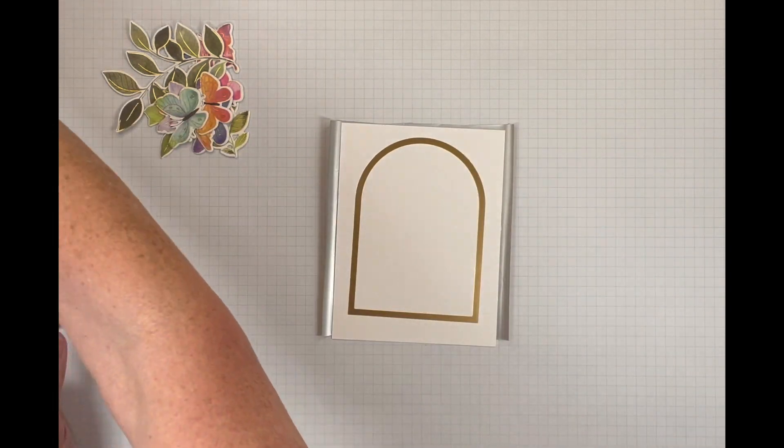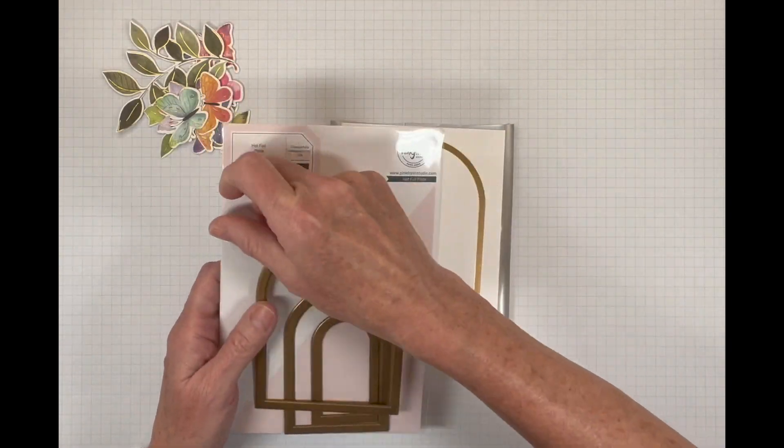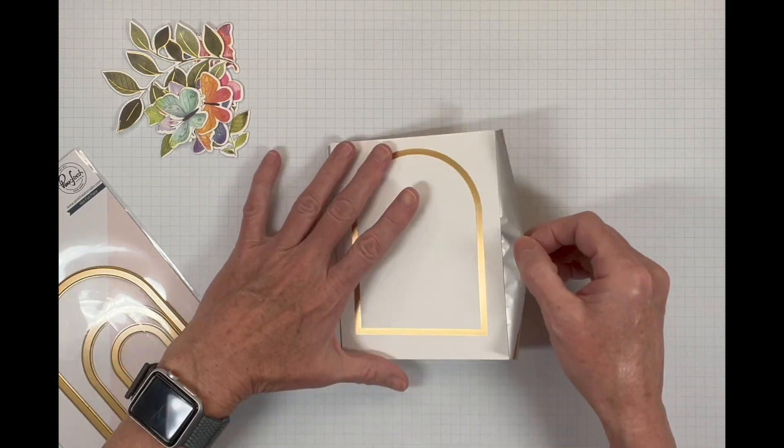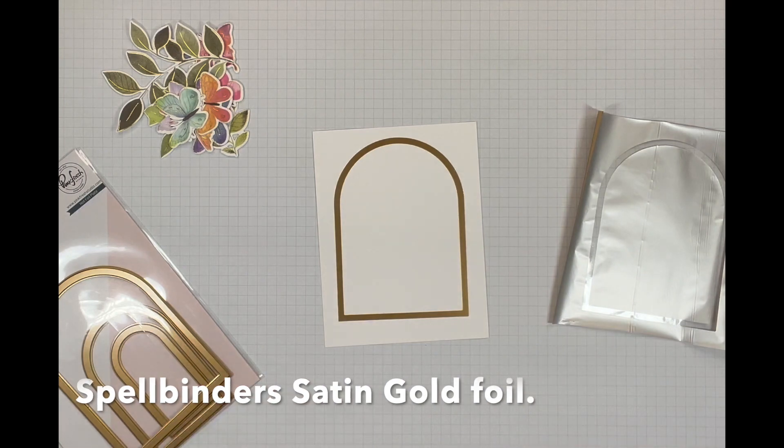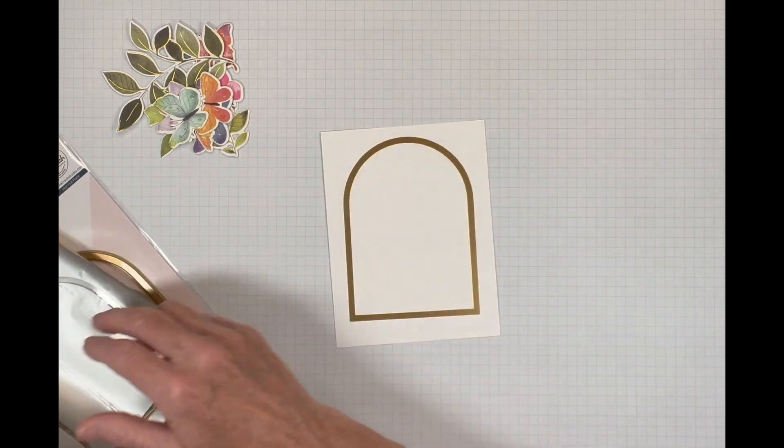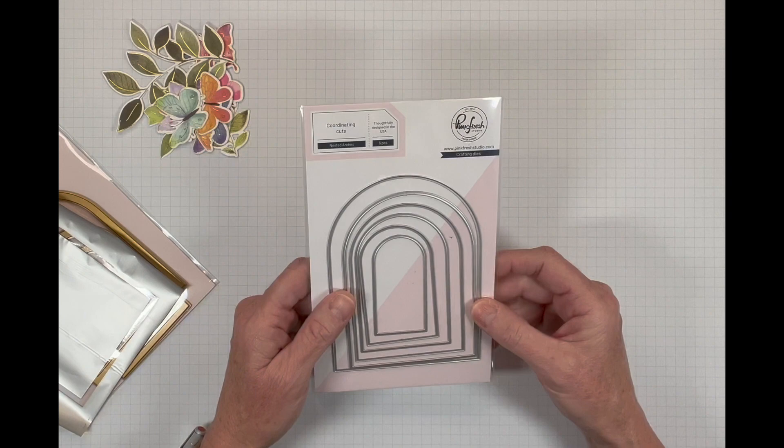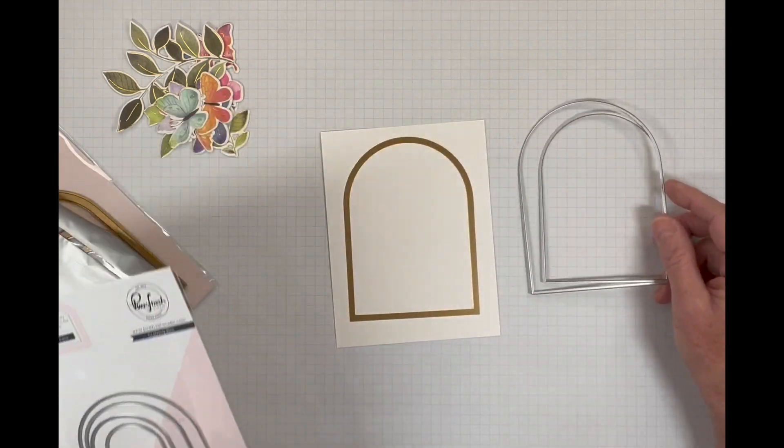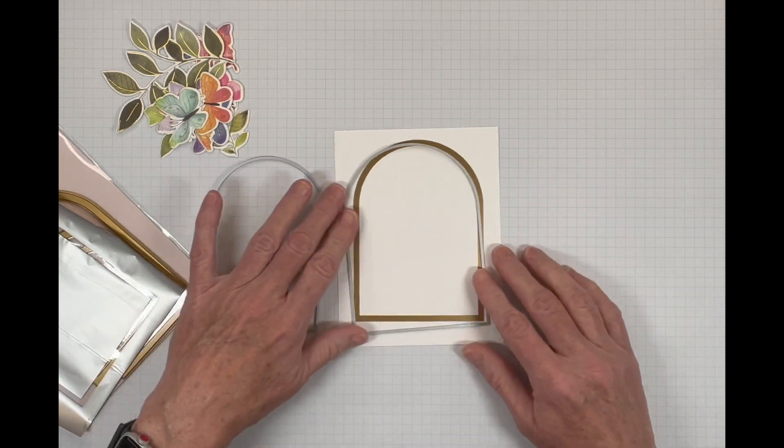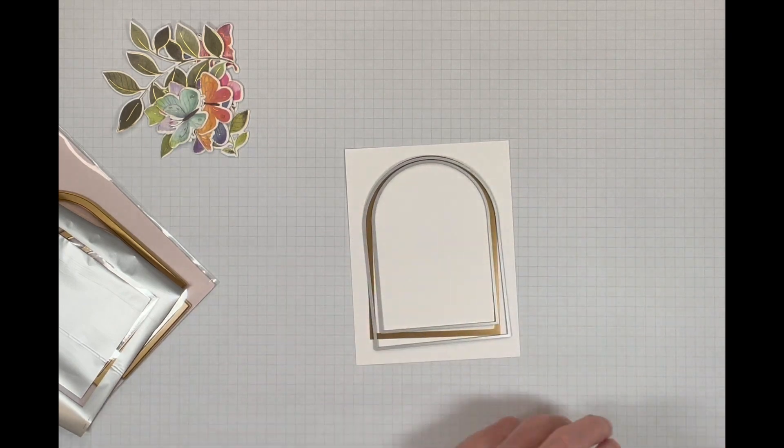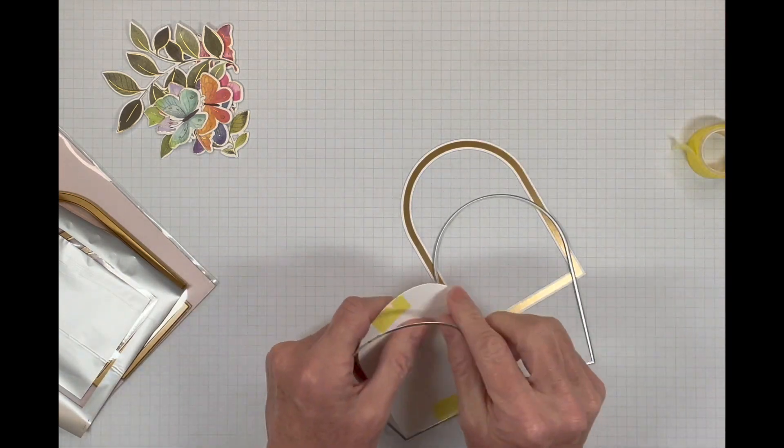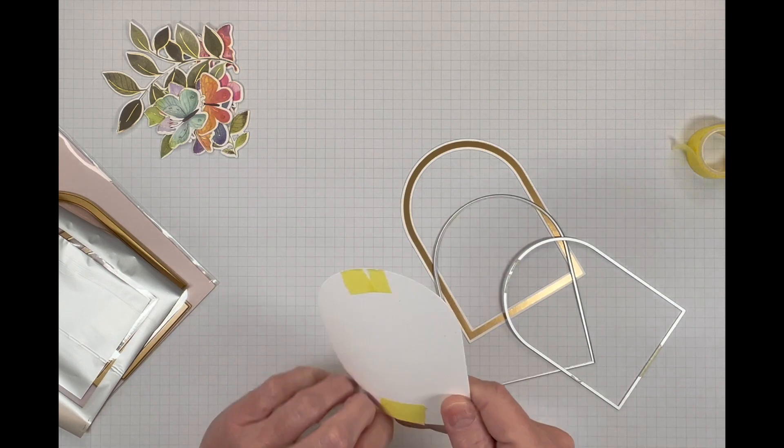So for part of my background, I brought in the nested arches. I hot foiled the largest nest on there. And that's just a four and a quarter by five and a half piece of paper that I started on. And I wanted to show you. So I've got my image left over from where I hot foiled that. We are also bringing in the nested arches coordinating die cuts. And with this, we are just going to line these up and then die cut that arch out. So our arch is all die cut. And then with this extra piece of paper in the middle, we are going to use that for our sentiment.